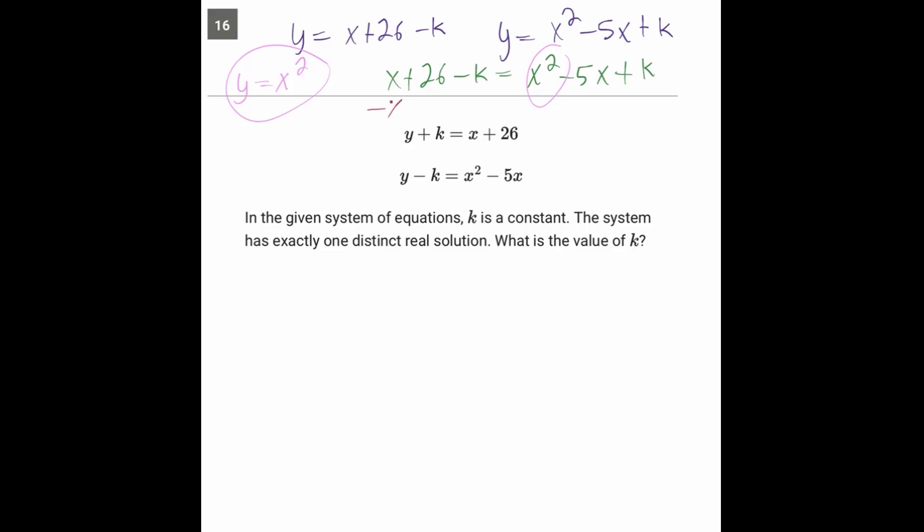So let's take away X from both sides. Let's take away 26 from both sides. And let's add K to both sides. So putting that all together, we're going to have zero equals X squared minus 6X. And we'll have plus K and plus K. So plus 2K, let's put that at the end. And don't forget that there's a minus 26 there. So right now we have this thing organized as a quadratic.